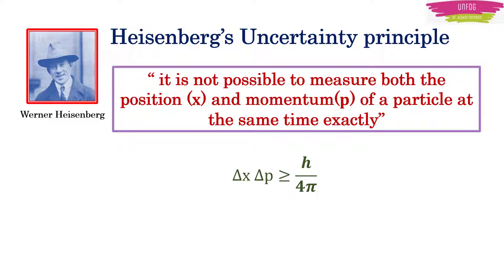The uncertainty principle allows the possibility that if uncertainty in position is zero, then uncertainty in momentum must be infinite. Similarly, if uncertainty in momentum is zero, the uncertainty in the position must be infinite. And their product is non-zero.